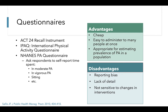Some examples of physical activity questionnaires include the ACT 24 recall instrument, the International Physical Activity Questionnaire, and the NHANES Physical Activity Questionnaire. Many of these questionnaires ask respondents to self-report the time spent in moderate physical activity, vigorous physical activity, sitting, and other behaviors. Questionnaires are cheap and easy to administer to many people at once. They can be appropriate for estimating prevalence of physical activity in a population, especially when you don't need extremely precise data.